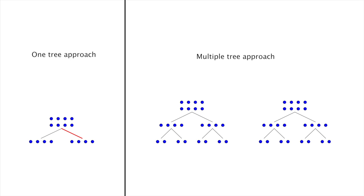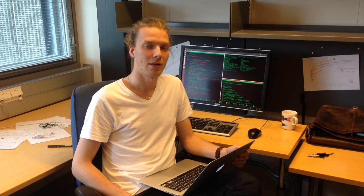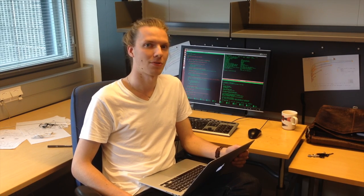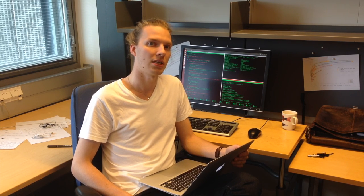In our research, we decrease the leaf size proportionally to the number of trees, so that the total number of data points in the leaves where the linear search is performed is approximately the same as in the one-tree approach. This way, the query time remains approximately the same, but our results show a significant improvement in accuracy.